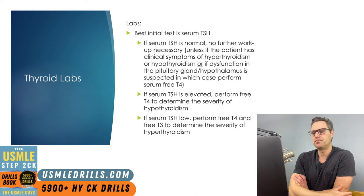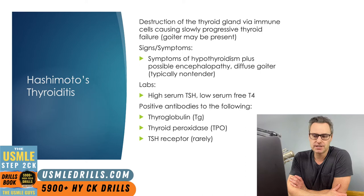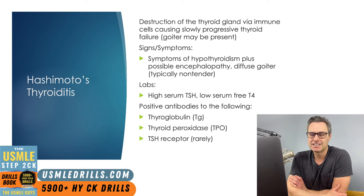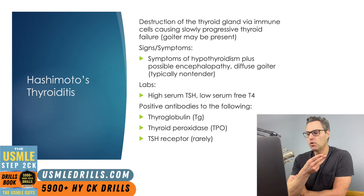Now let's take a look at Hashimoto's thyroiditis. The vast majority of hypothyroidism in the United States is caused by Hashimoto's thyroiditis. This disease predominantly affects women, but can also affect men. In addition to the typical signs and symptoms, you also want to look for Hashimoto's encephalopathy — which presents as acute onset confusion and altered mental status, and some people may progress to coma. Other neurological findings include seizures, myoclonus, and diffuse hyperreflexia. Labs show high serum TSH and low serum free T4. Since Hashimoto's is autoimmune, patients have antibodies to thyroglobulin, thyroid peroxidase, and antibodies that can block the TSH receptor.